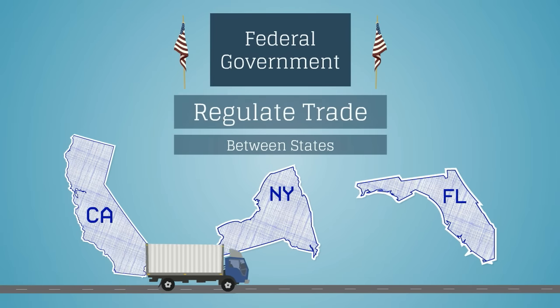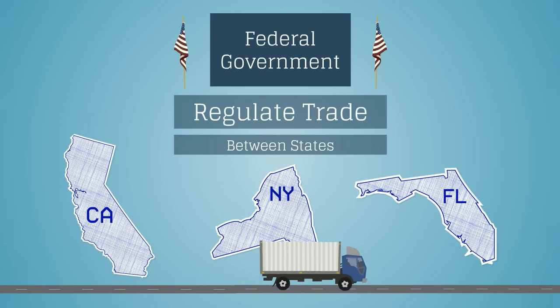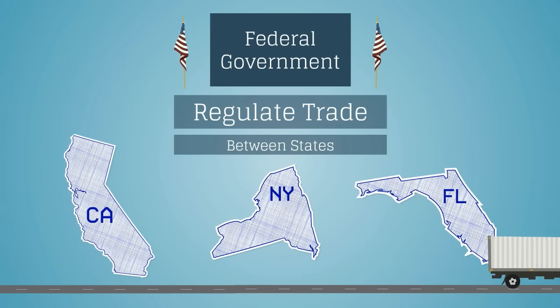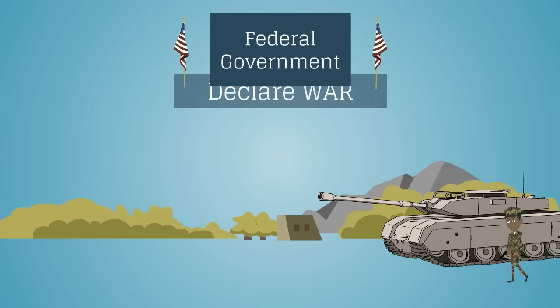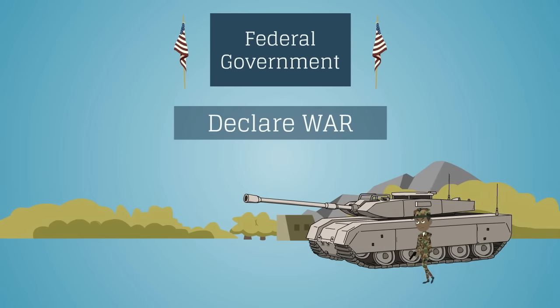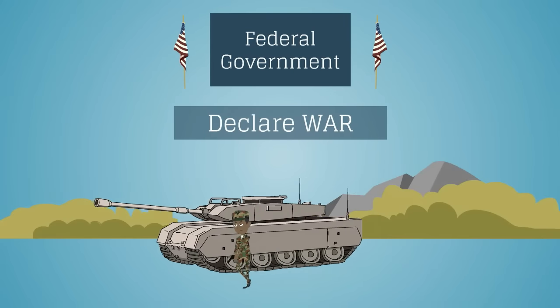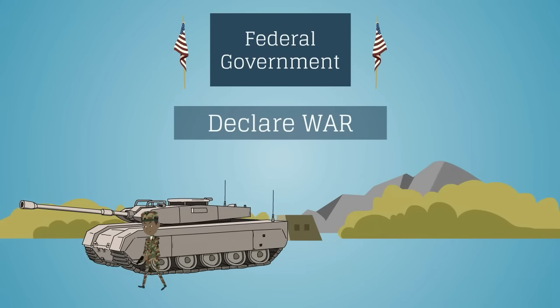One power of the federal government is to regulate trade between the states. Another power of the federal government is to declare war.